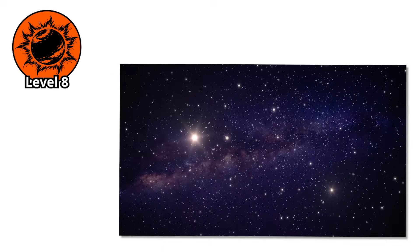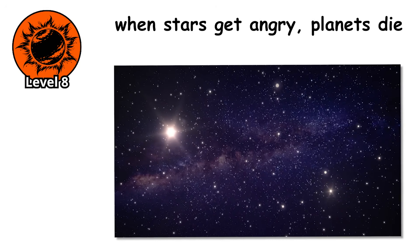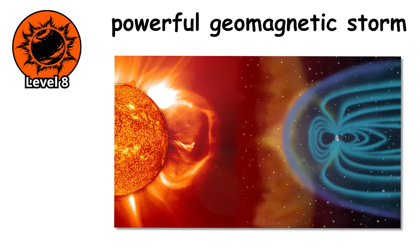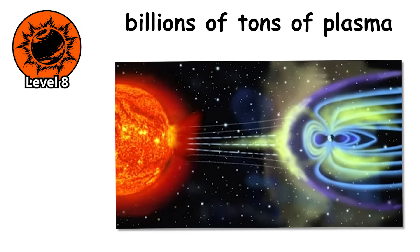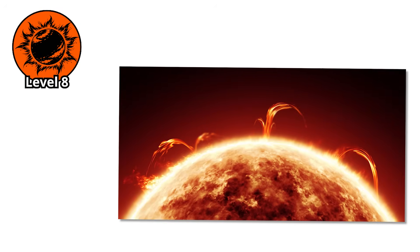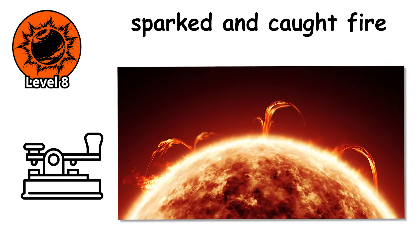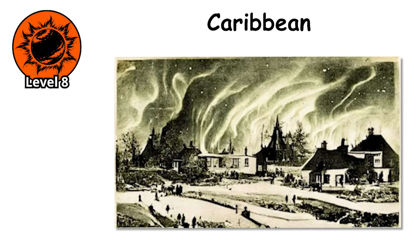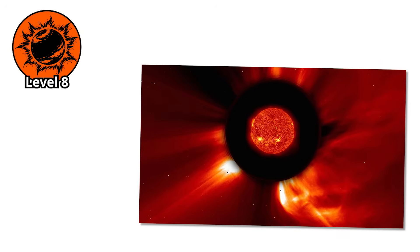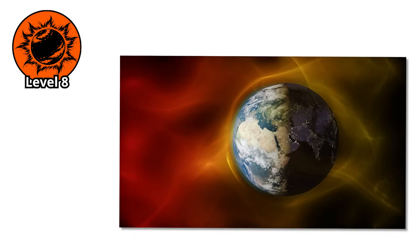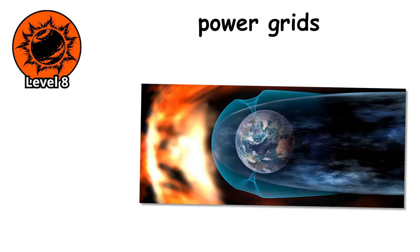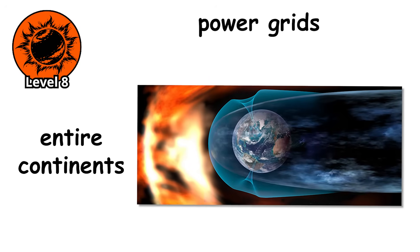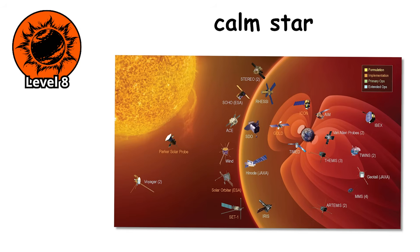Level 8. Stars have weather too, and when stars get angry, planets die. In 1859, Earth experienced the Carrington Event, the most powerful geomagnetic storm in recorded history. A massive solar flare ejected billions of tons of plasma directly toward Earth. When it arrived, telegraph systems worldwide sparked and caught fire. Auroras were seen as far south as the Caribbean. The night sky glowed so brightly that people could read newspapers at midnight. If the Carrington Event happened today, it would cause trillions of dollars in damage, potentially knocking out power grids across entire continents for months or years. But the Sun is a relatively calm star. Other stars are far more violent.